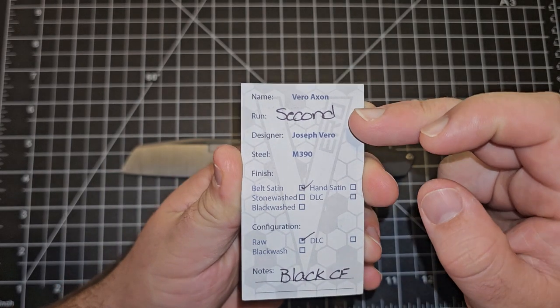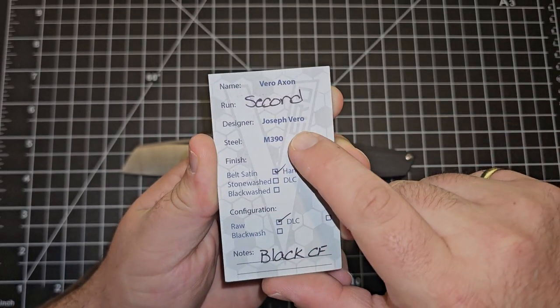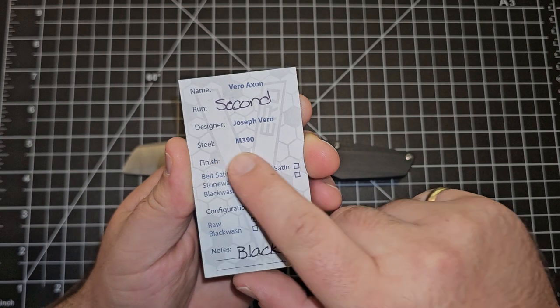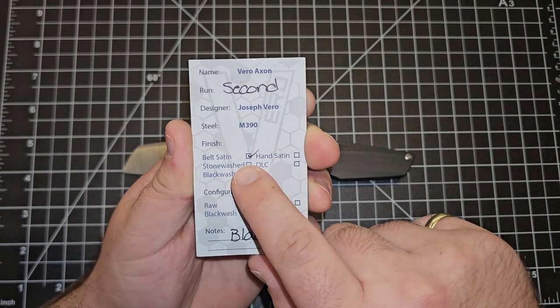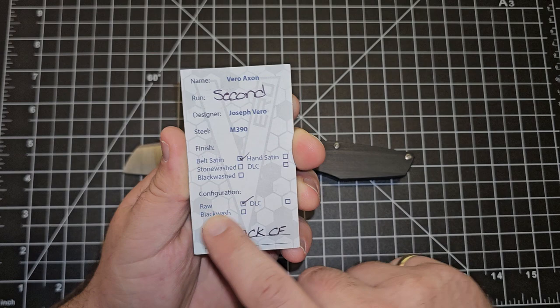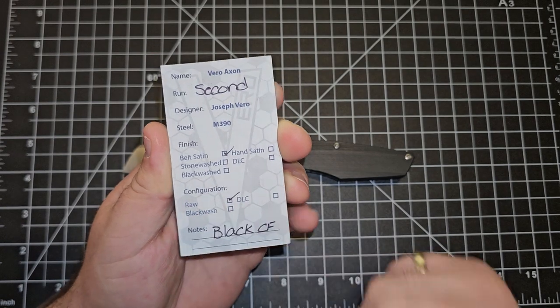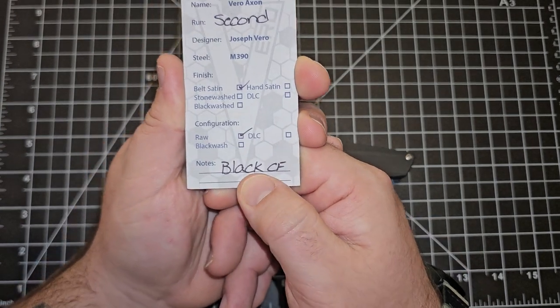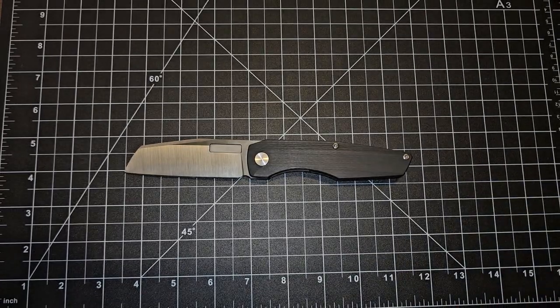They always come with one of these cards. This is a second production run. Joseph Vero is the designer and it's in M390 blade steel with a belt satin finish, and this is the raw configuration of black end-cut carbon fiber.